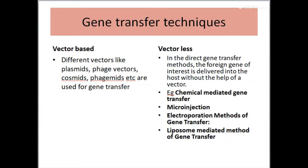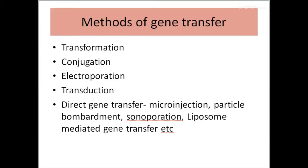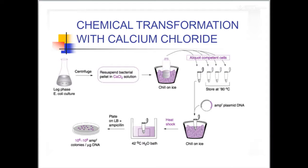Welcome back to the second session of gene transfer techniques. We had previously mentioned vector-based methods as well as vectorless methods. Once you have a vector, you can transfer recombinant DNA combined with a vector by certain techniques involving transformation, or gene transfer can happen between two different bacteria by conjugation, or by the process of electroporation.